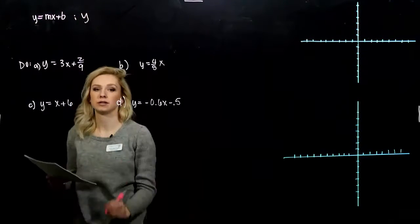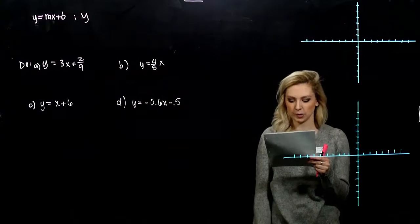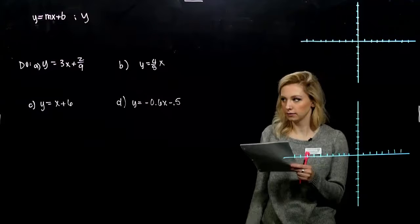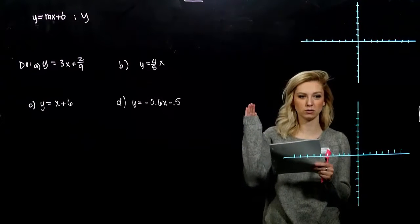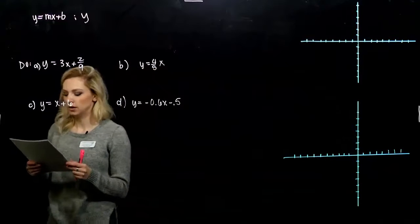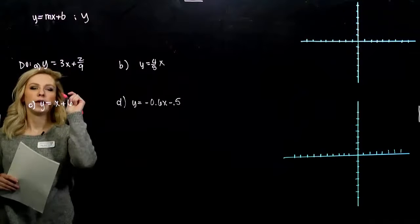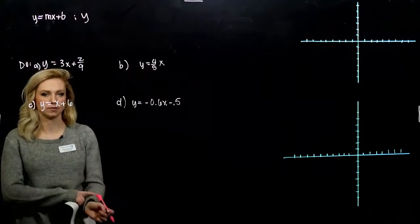We want to get y on its own. When y is on its own, then it's in this form, and the coefficient of the x term is the slope of the line. So it has to be in that y equals blah form for us to be able to pick off m. So let's look at a few. All of these are linear, and we want to determine what is the slope of each of them.